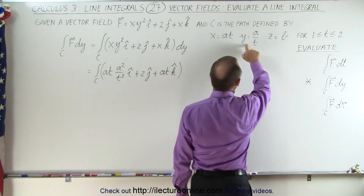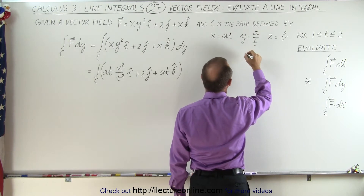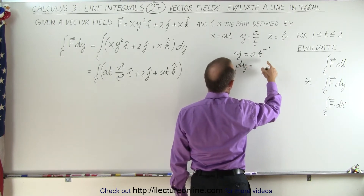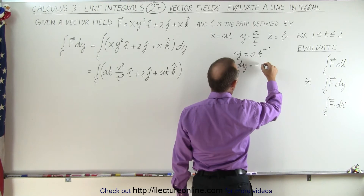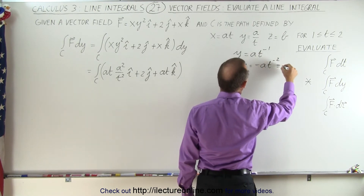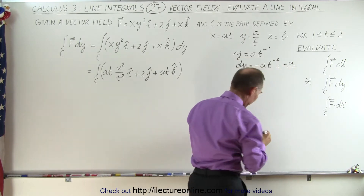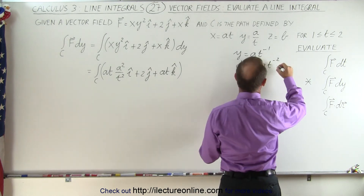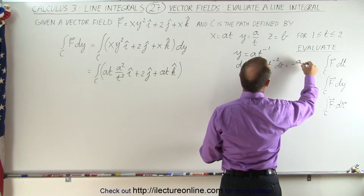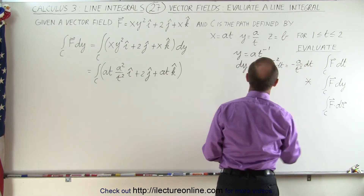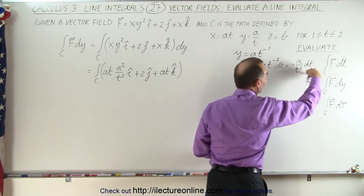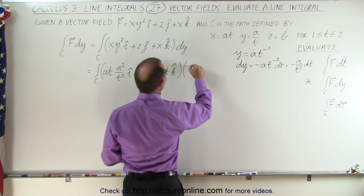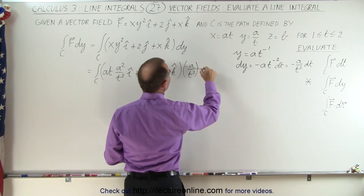If we go back up here, we see y equals a over t. That means y equals a times t to the minus 1, and therefore dy equals minus a times t to the minus 2 dt, which is equal to minus a over t squared dt. So we're going to replace dy by this differential in terms of t, and that's how we handle that one.